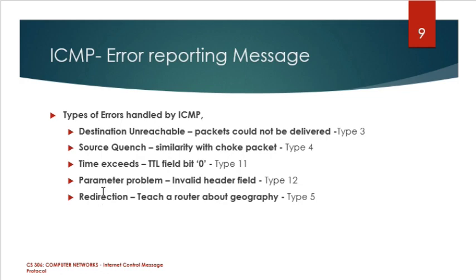The next one is parameter problem. It is generated as a response for any error message involving an invalid header field. You will be notified of a parameter problem. The last one is redirection message — it teaches a router about geography. That means if one route fails to reach the destination, the router checks for another route.